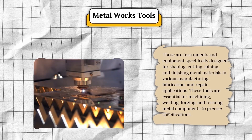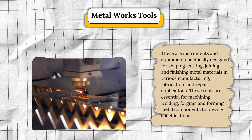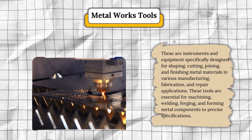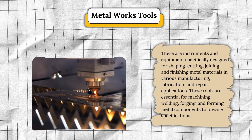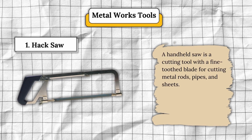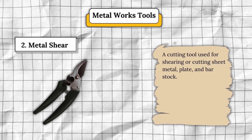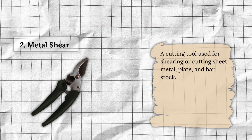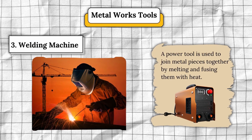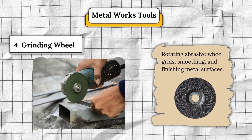The fourth classification is metalworks tools. These are instruments and equipment specifically designed for shaping, cutting, joining, and finishing metal materials in manufacturing, fabrication, and repair applications. Number one, hacksaw — a handheld saw with a fine-toothed blade for cutting metal rods, pipes, and sheets. Number two, metal shear — a cutting tool used for shearing or cutting sheet metal, plate, and bar stock. Number three, welding machine — a power tool used to join metal pieces together by melting and fusing them with heat. Number four, grinding wheel — a rotating abrasive wheel for grinding, smoothing, and finishing metal surfaces.